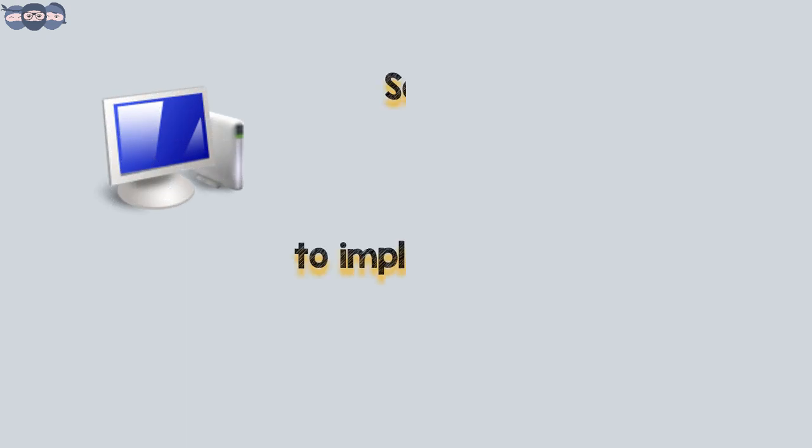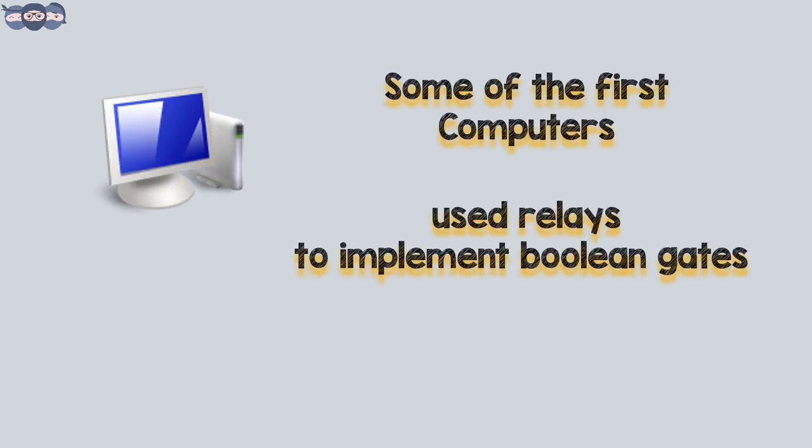In fact, some of the first computers ever built used relays to implement Boolean gates.